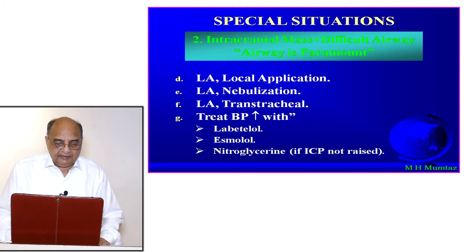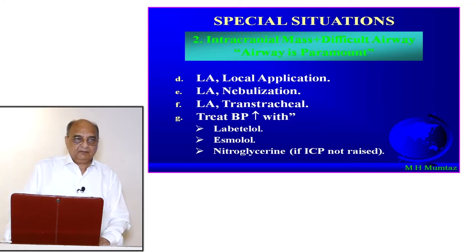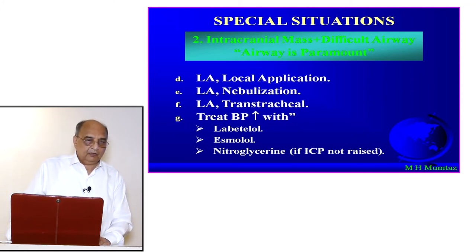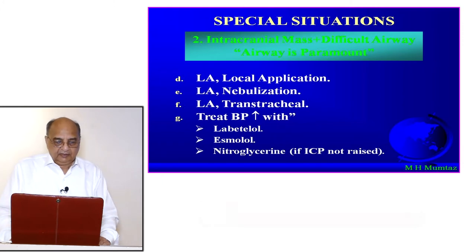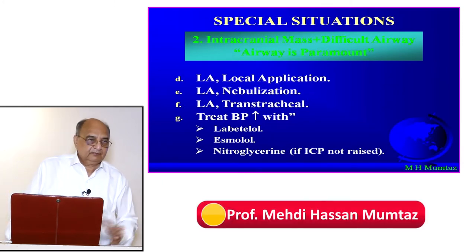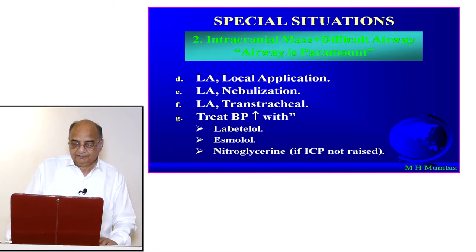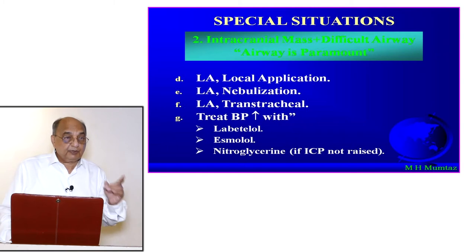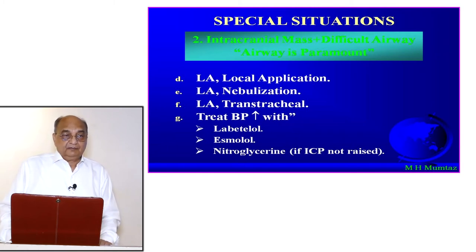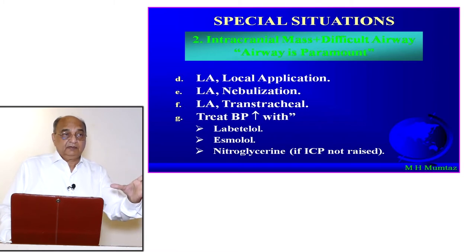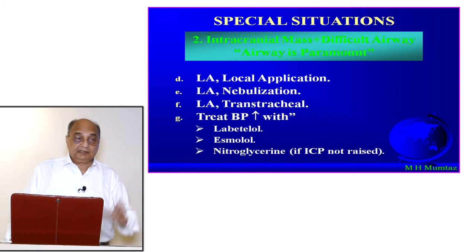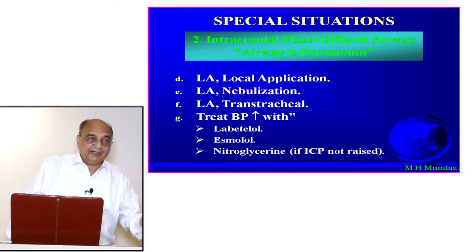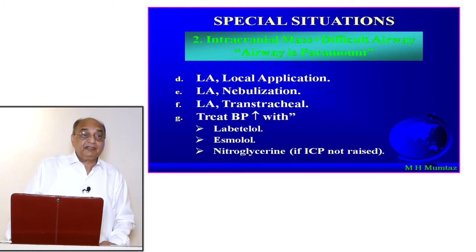Treat increased blood pressure with labetalol — an alpha and beta blocker — or esmolol, a beta blocker. Nitroglycerin is a vasodilator. If ICP is not raised, you can use nitroglycerin; however if ICP is already raised, giving nitroglycerin will cause vasodilatation and increase blood flow per unit time to the brain, which we want to avoid.